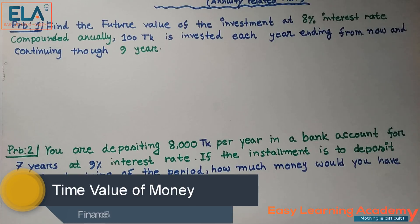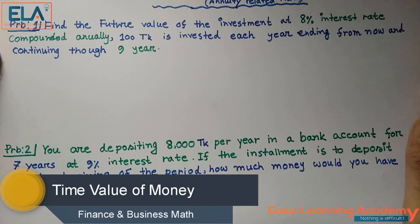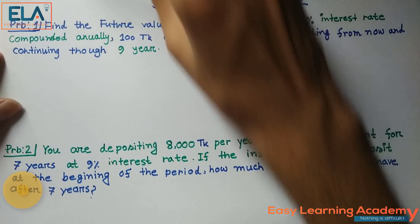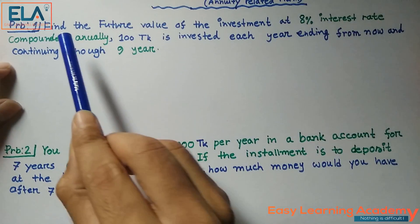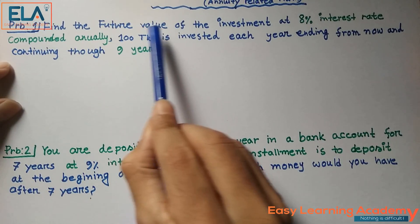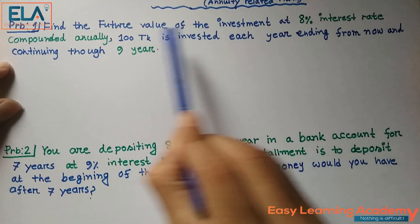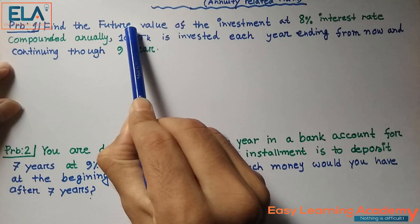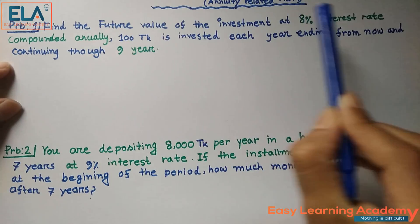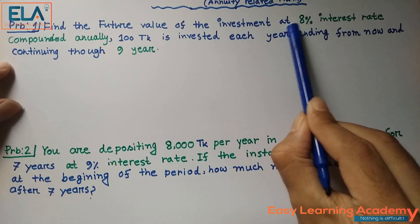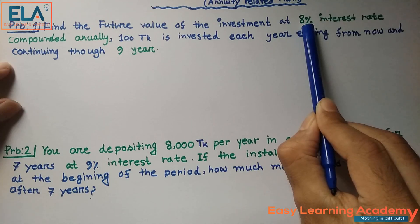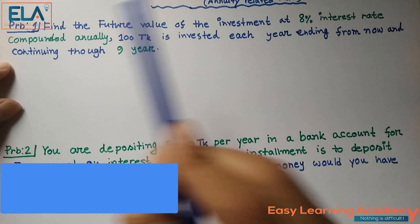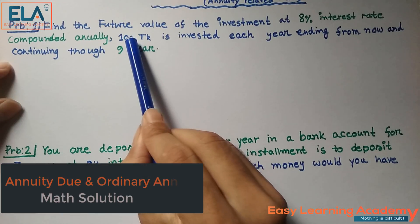We will write the problem. The problem is to find the future value of an investment at an 8% interest rate, compounded annually.